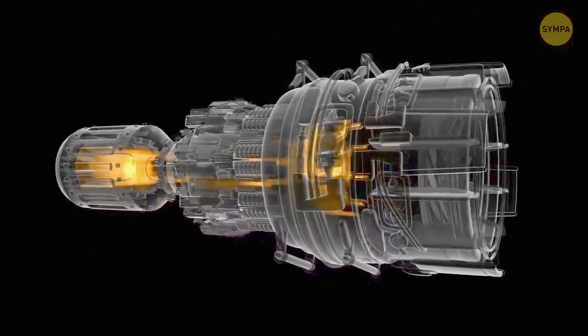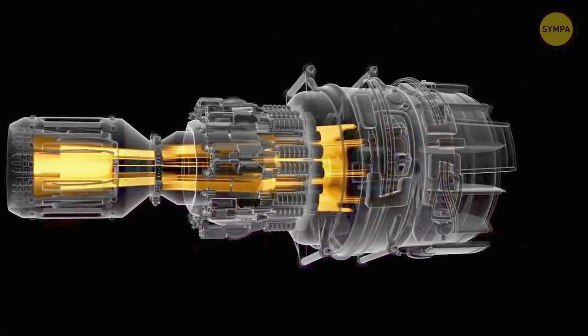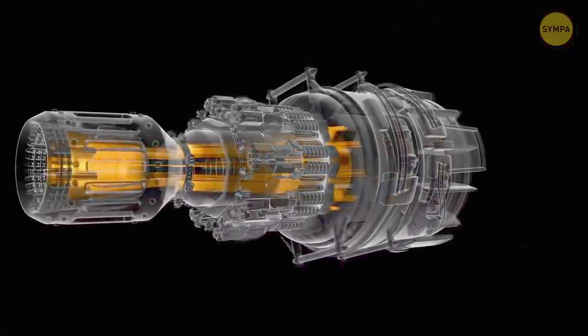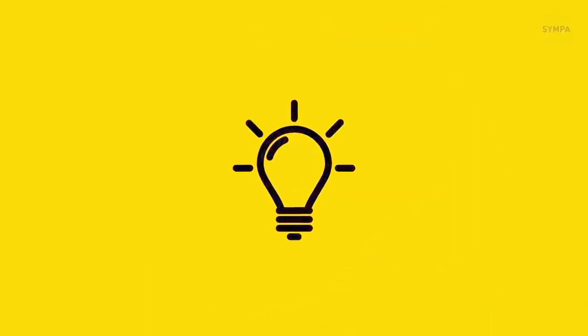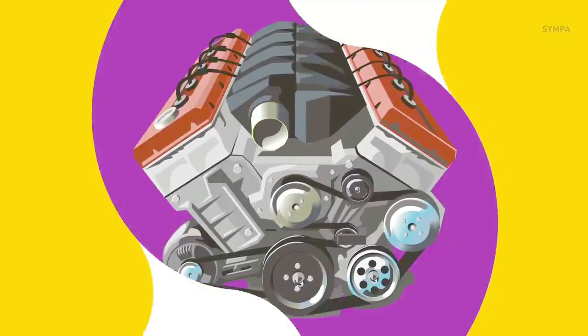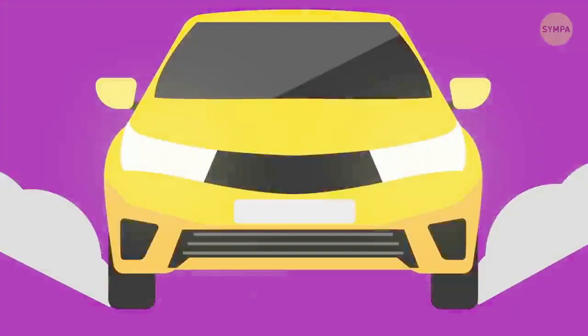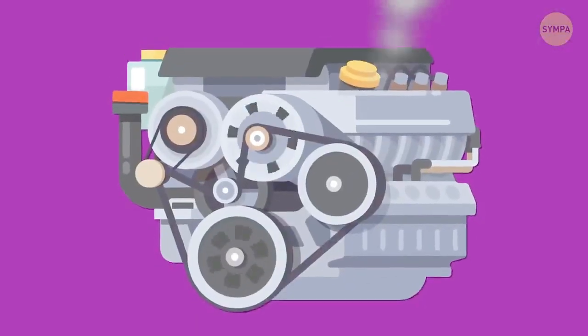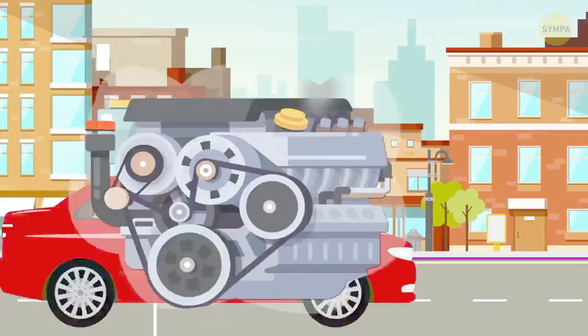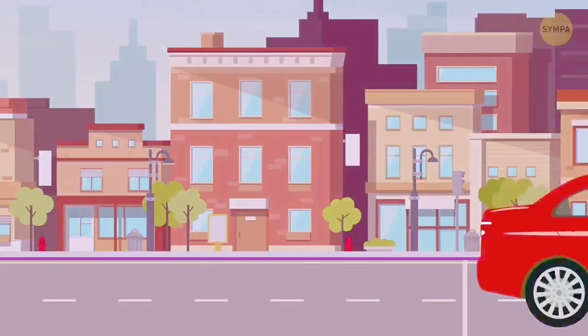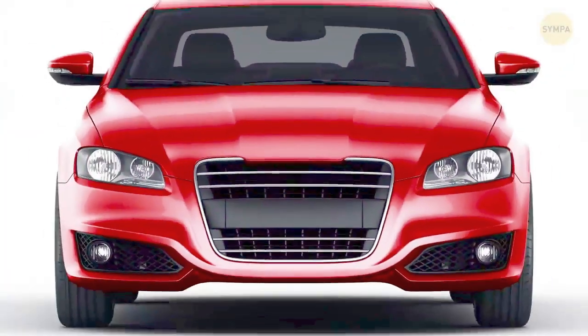Jet reaction engines work by combining fuel with air to create combustion. It's the force of this explosion that keeps the plane in the sky. Internal combustion engines in most vehicles work on essentially the same principle. The difference is that in a car, the explosive force is contained within the vehicle and drives the pistons and gears that turn your wheels.